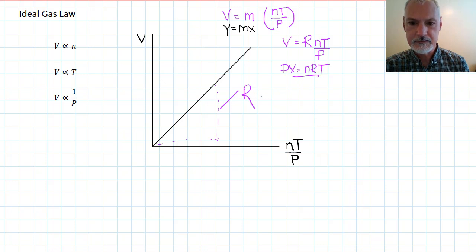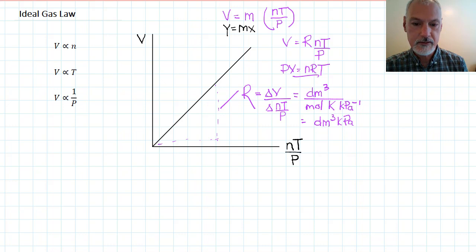Now, a little bit about the units of R. R, as I mentioned, is the slope of this line, which would be a change in volume on the top, and the bottom would be the change in nT over the pressure. Now, if I use for my change in volume units of decimeters cubed, the units of n are moles, the units of T are kelvin, and the units of pressure, one over pressure, would be kilopascals to the negative one. And bringing that negative one up top, we get units then of decimeters cubed, kilopascals, moles, and kelvin.